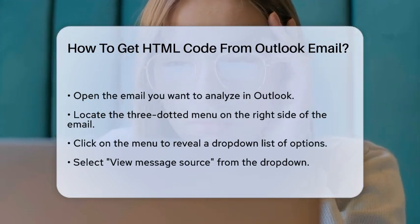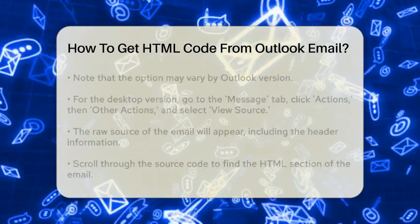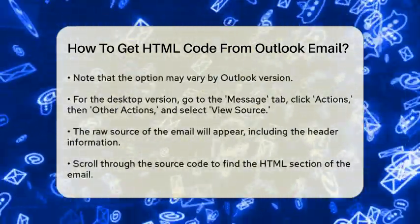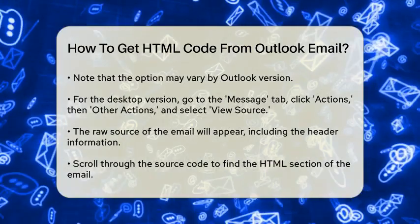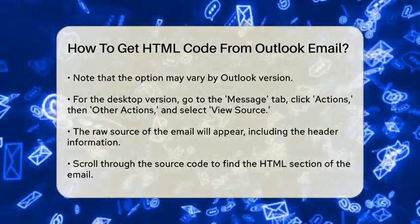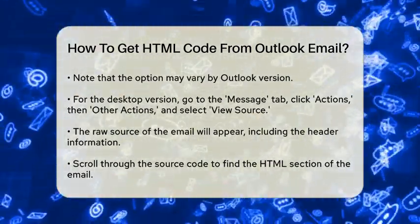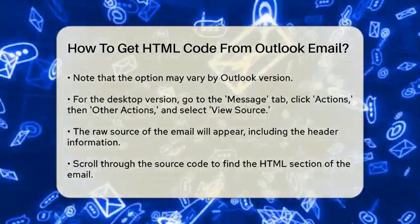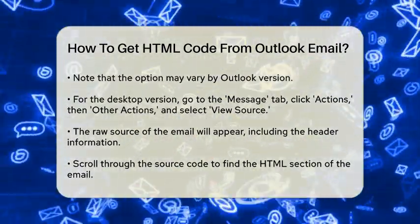This option might be labeled slightly differently depending on the version of Outlook you're using. For example, in the desktop version of Outlook, you would go to the Message tab, click on Actions, then select Other Actions, and finally choose View Source.